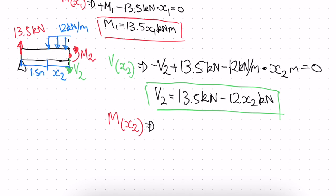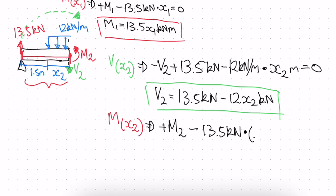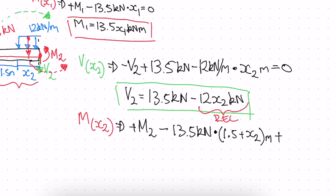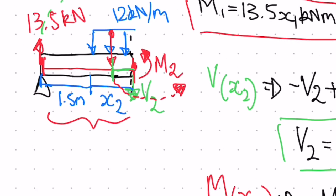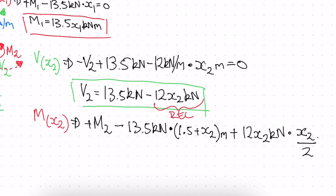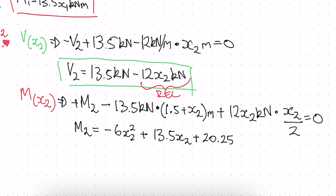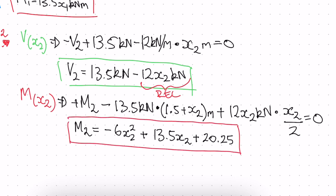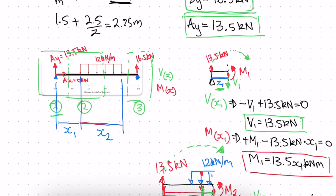For the moment M2: positive M2, minus 13.5 kilonewtons times (1.5 plus X2), plus the distributed load resultant 12·X2 kilonewtons times X2/2 equals zero. Solving for M2 gives the moment function for section 2. We can find any moment value between the X1 and X2 points using this formula.